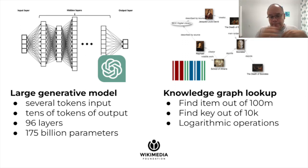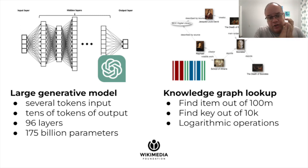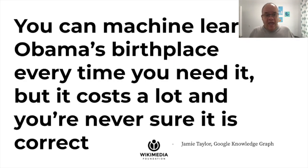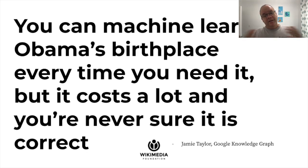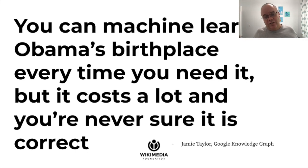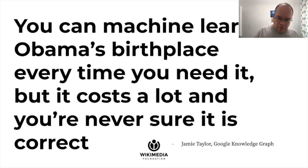For training, I always remember what my former manager at Google, Jamie Taylor — one of the architects of the Google Knowledge Graph — has said: 'You can machine-learn Obama's birthplace every time you need it. But that costs a lot of money, and you're never sure it is correct. You can take a text, read it every time, and answer. Or you can just use a knowledge graph and look it up, and be sure that the answer is correct.'